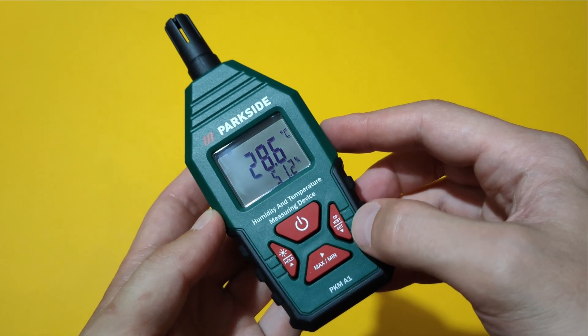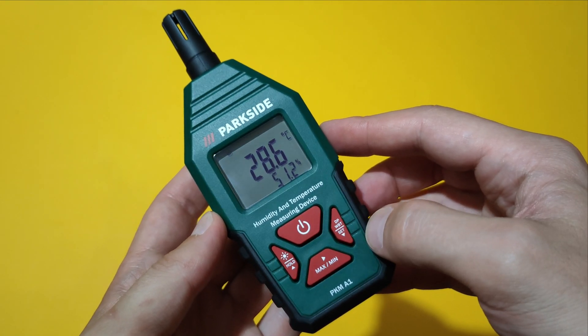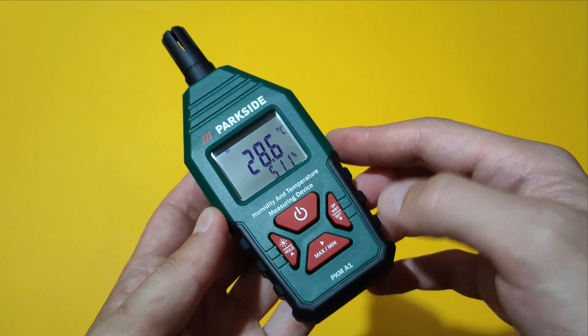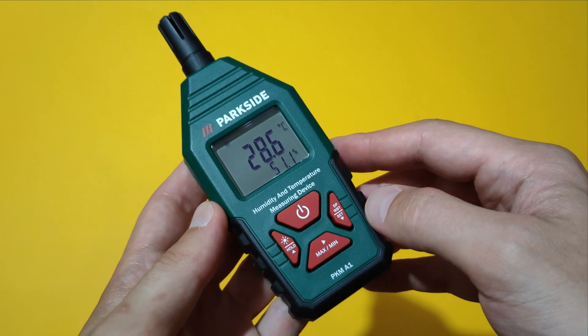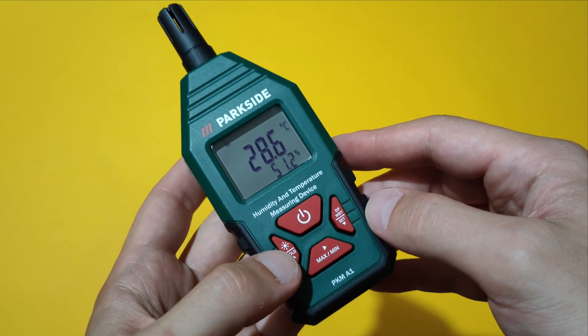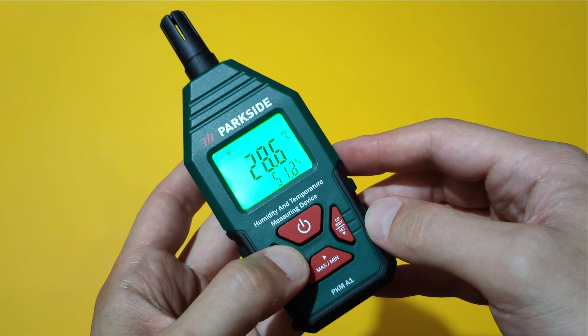The right button is for selecting between air temperature, dew point temperature and wet bulb temperature. We have a button for showing the lowest and the highest readings and this button over here is combining the hold function and the on-off switch for the backlight.